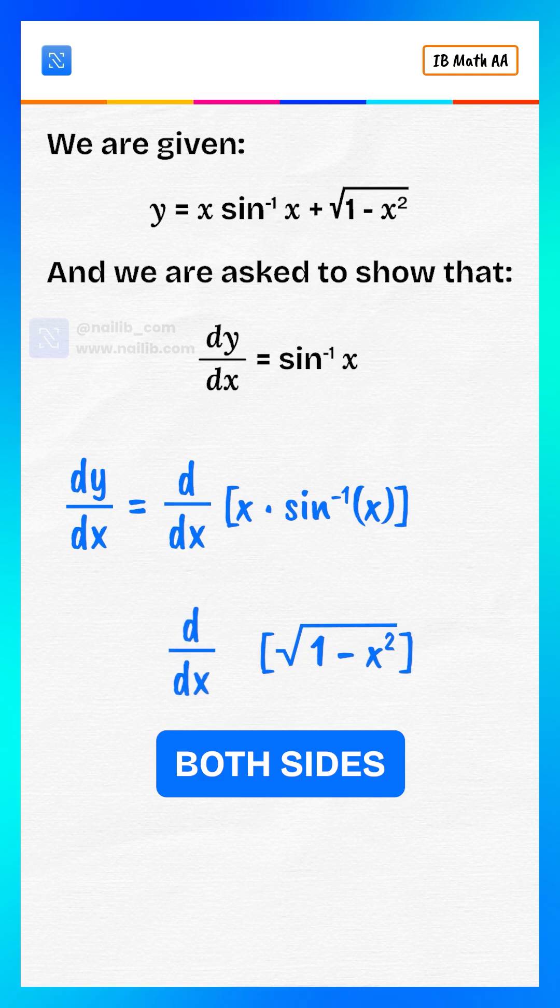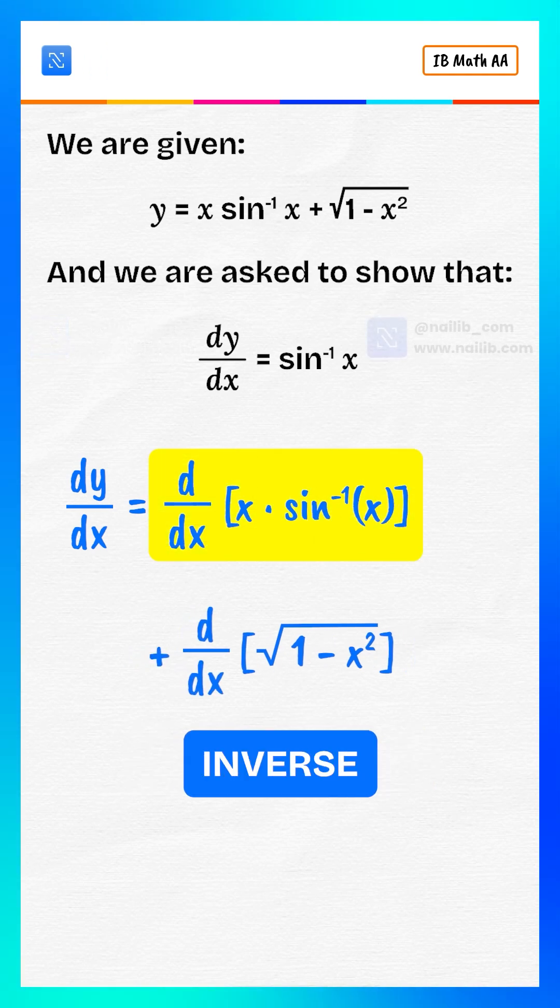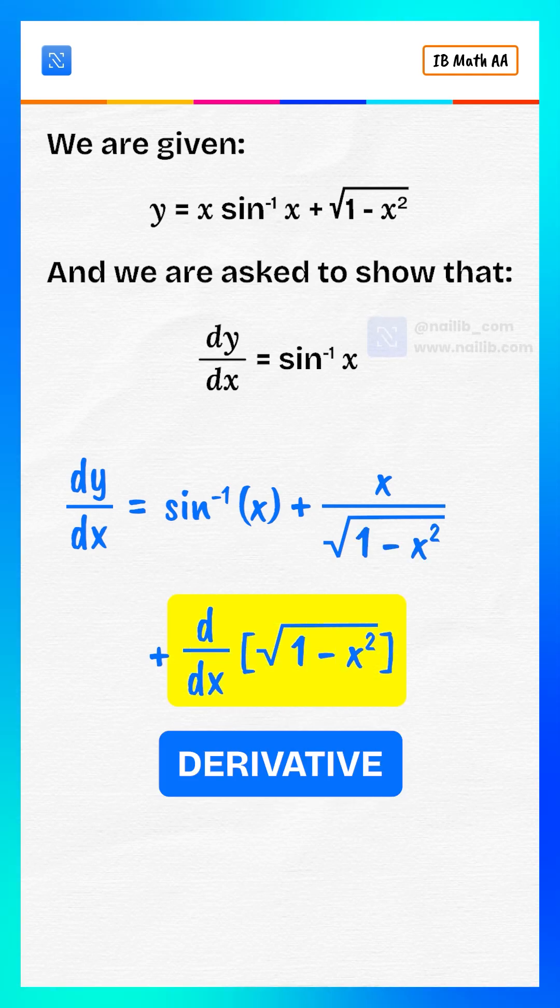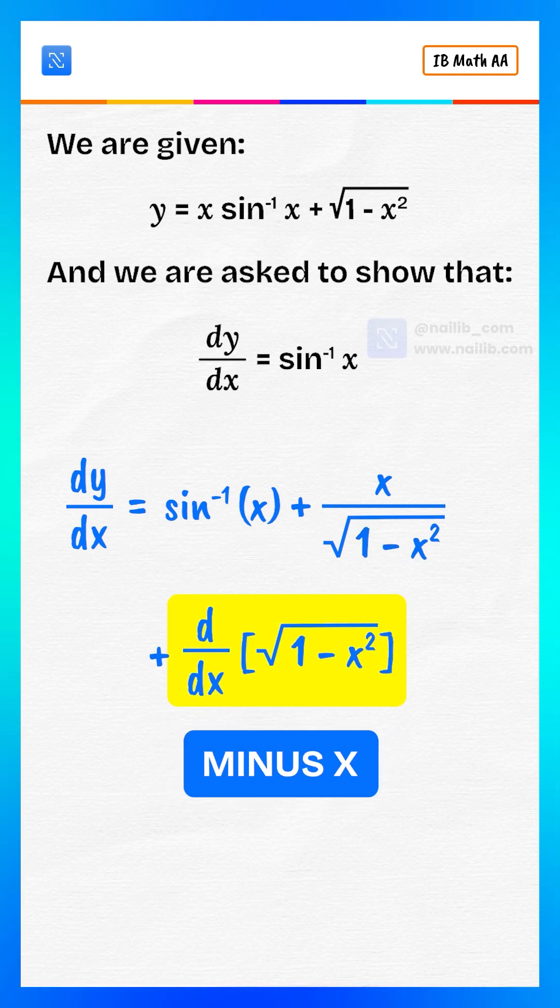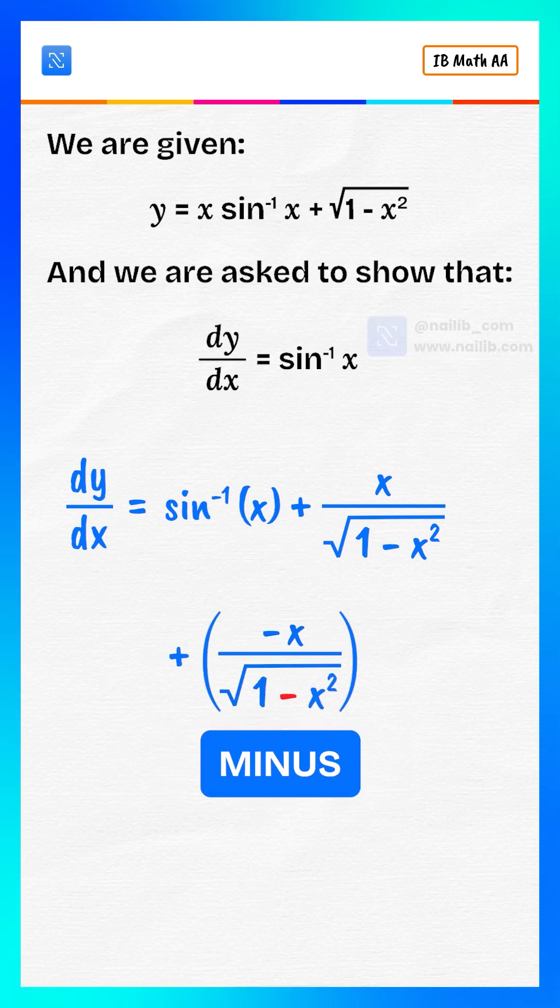Let's differentiate both sides with respect to x. The derivative of x multiply inverse sine of x is inverse sine of x plus x divided by square root of 1 minus x squared. The derivative of square root of 1 minus x squared is negative x divided by square root of 1 minus x squared.